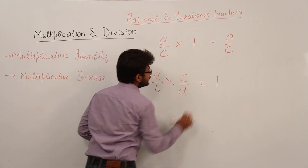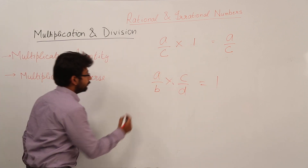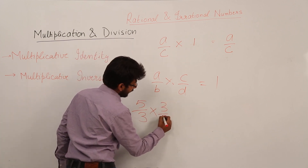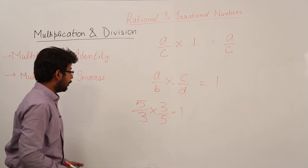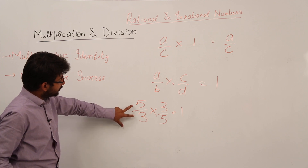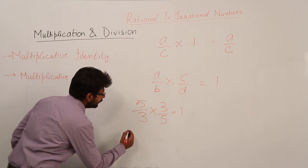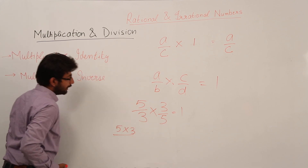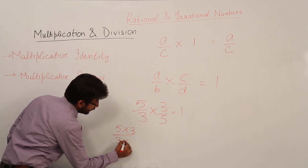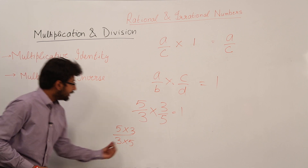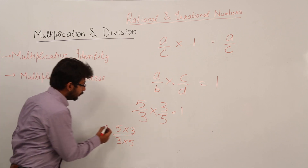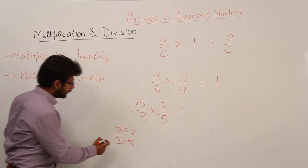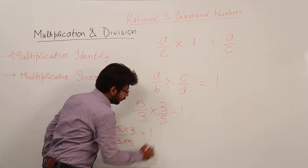For example, if I multiply 5/3 with 3/5, my answer would be equal to 1. We multiply the numerators: 5 × 3, divided by the denominators: 3 × 5. The 5 in the numerator and 5 in the denominator cancel out, and the 3 in the denominator and 3 in the numerator cancel out, so my answer is equal to 1.